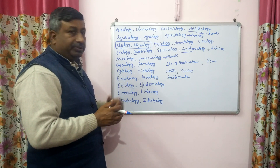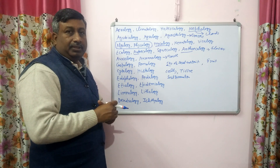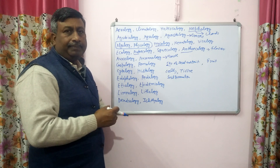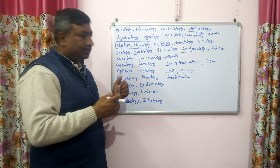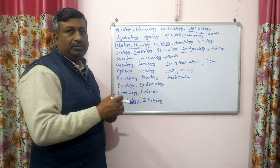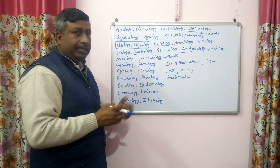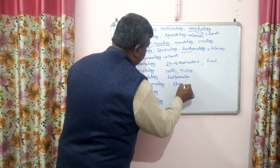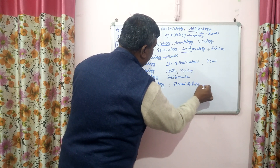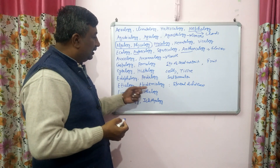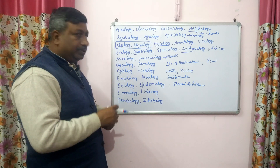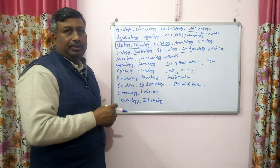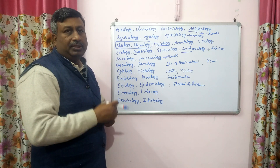Etiology and epidemiology: etiology is the study of the cause of disease — what is causing a disease, whether it is bacteria, fungi, or some other cause. That is etiology. While epidemiology is related with the origin and spread of disease — how a disease originated and how it is spreading. Pathology is the study of disease generally, so plant pathology deals with plant diseases.